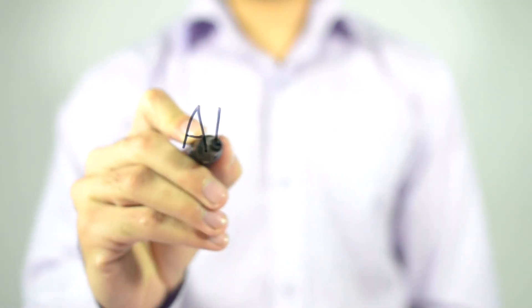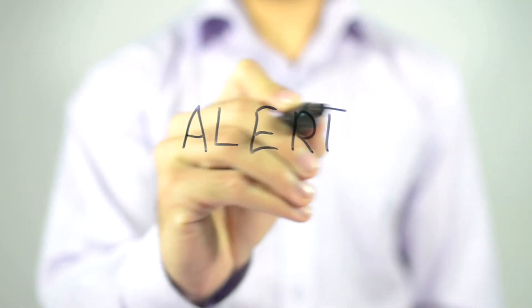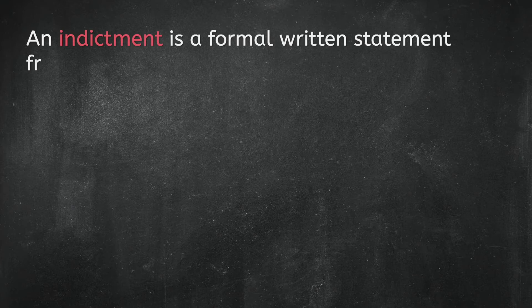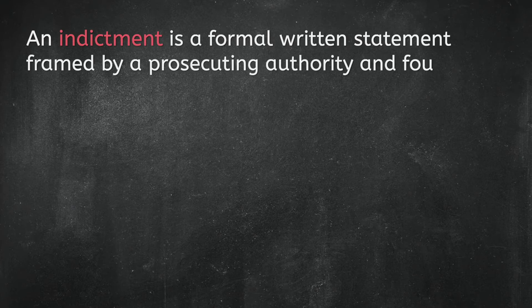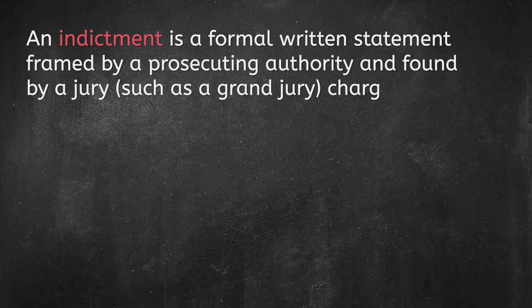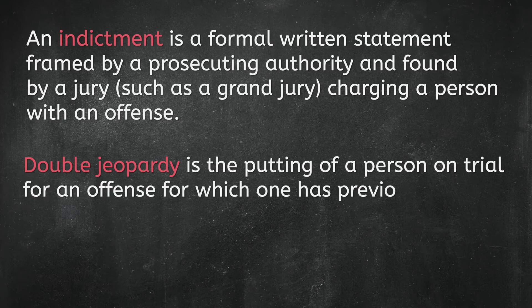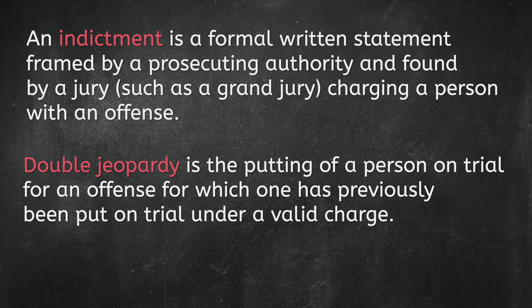We have a couple more terms coming your way. The first is indictment. An indictment is a formal written statement framed by a prosecuting authority and found by a jury, such as a grand jury, charging a person with an offense. And the second term is double jeopardy. Double jeopardy is the putting of a person on trial for an offense for which one has previously been put on trial under a valid charge.